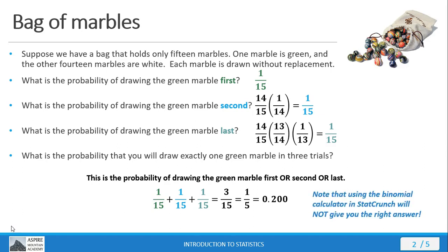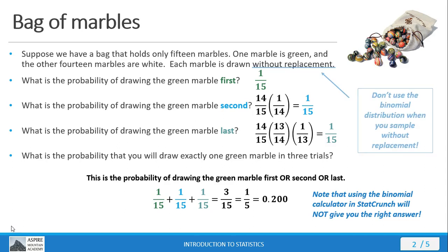Note that if you try working this with the binomial distribution, you're not going to get the right answer. The reason is because you're sampling without replacement. When you are sampling without replacement, you cannot use the binomial distribution to solve for your probabilities.